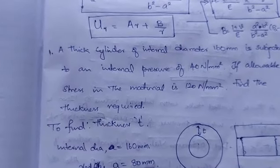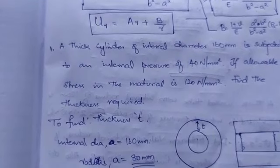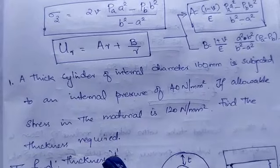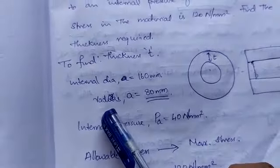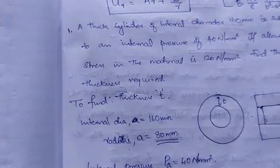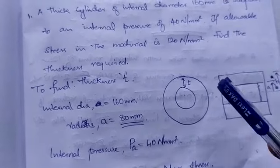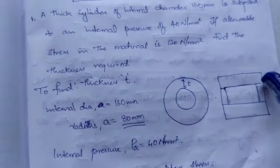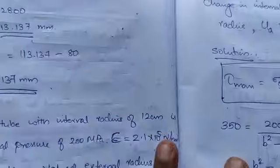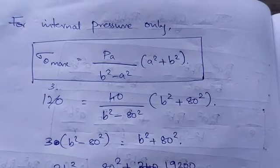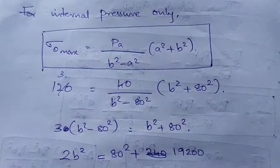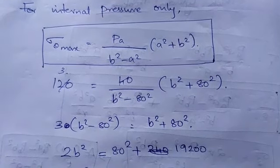From the last lecture, the maximum stress is along the theta direction, so sigma_theta_max. We derived an equation for it, and sigma_theta_max is given as 120 N/mm². For the special case of only internal pressure, sigma_theta_max = p_a × (a² + b²) / (b² − a²). This is our working equation.